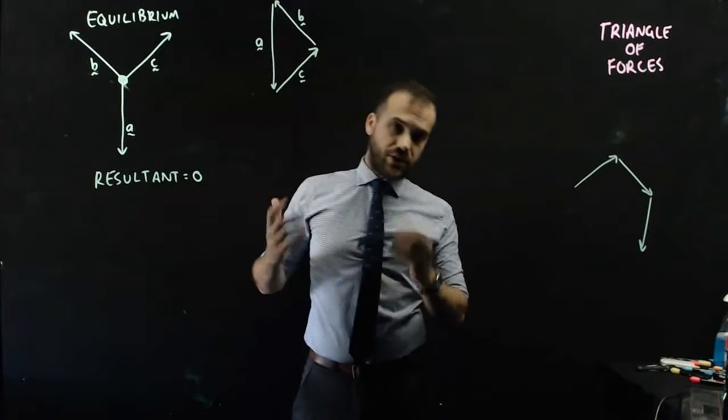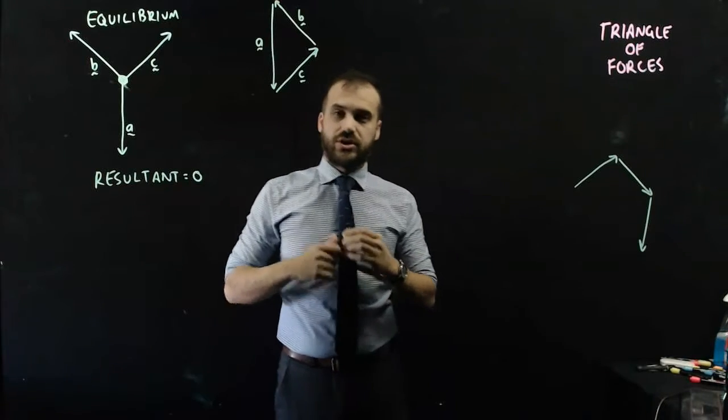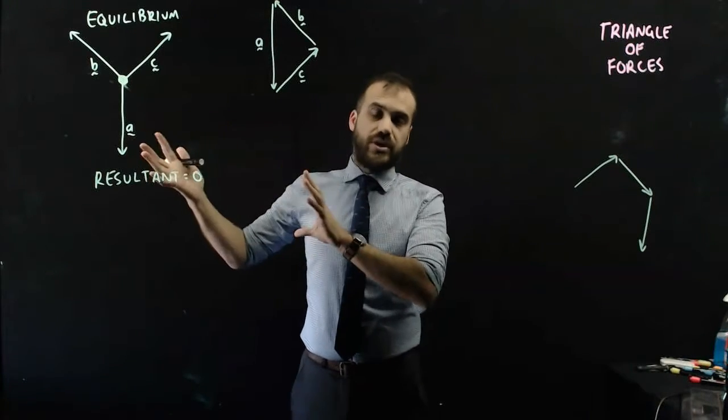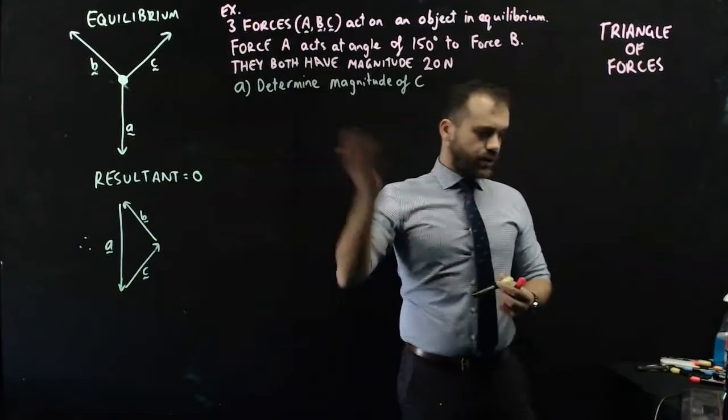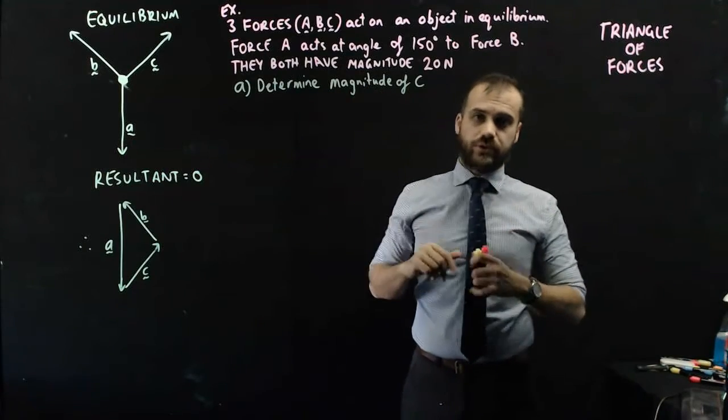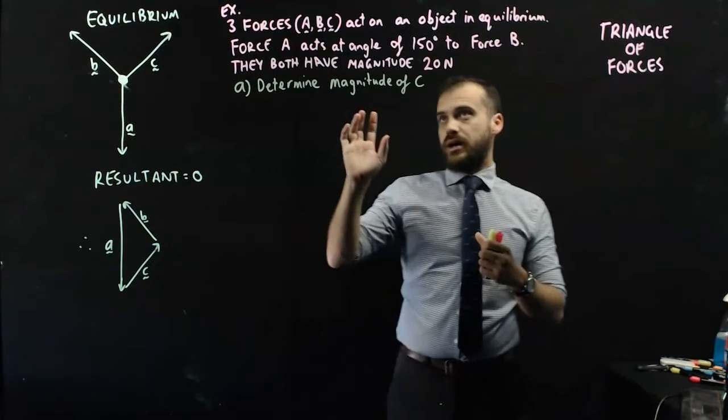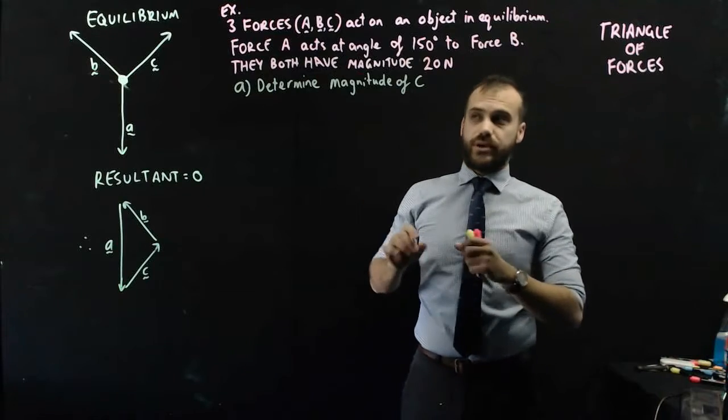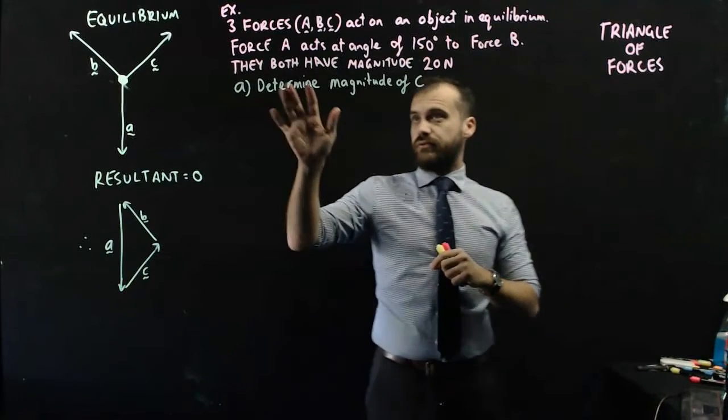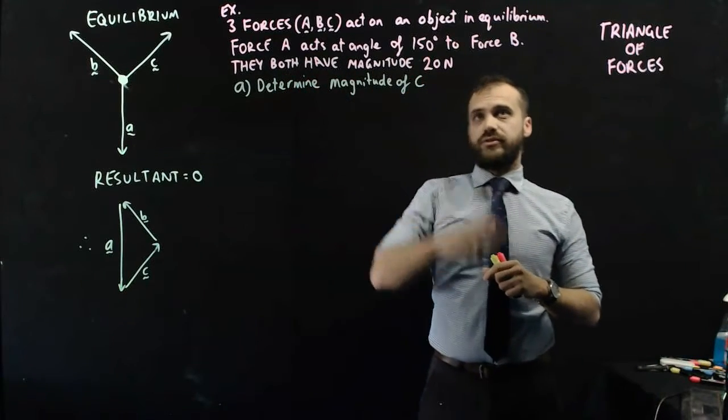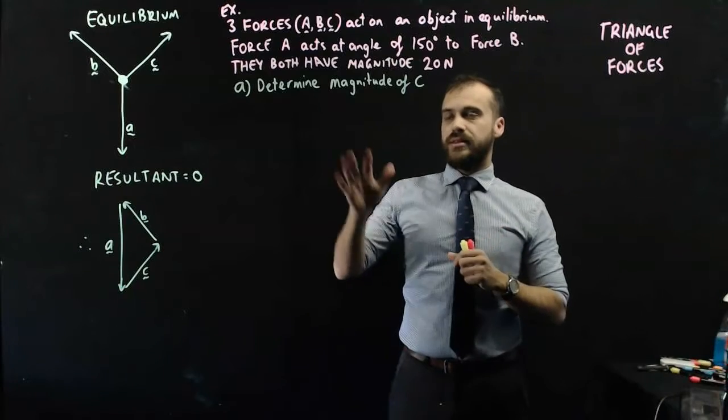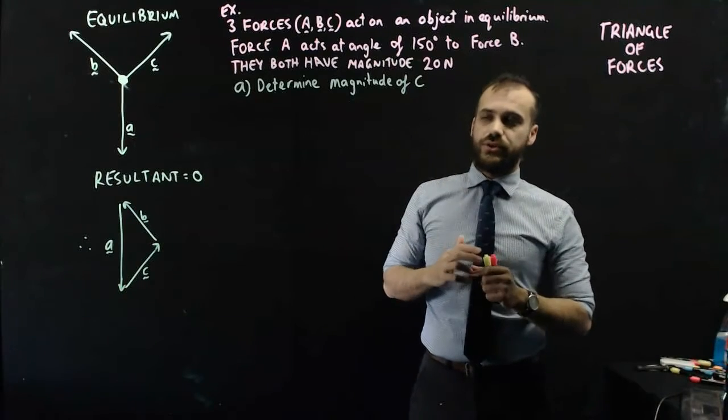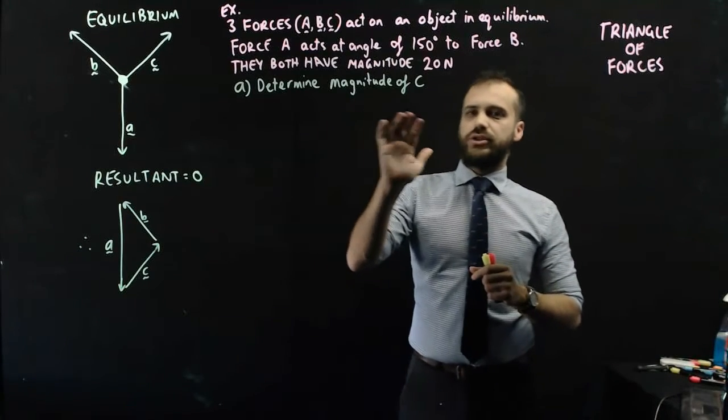We can use this and our sine rule and our cosine rule to solve questions where things are in equilibrium. Here's our example. Three forces A, B, C act on an object in equilibrium. Their resultant is going to be zero. Force A acts at an angle of 150 degrees to force B. They both have magnitude 20 newtons. Determine magnitude of C.